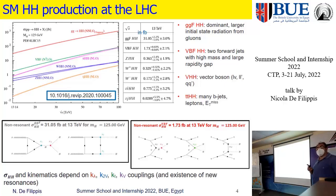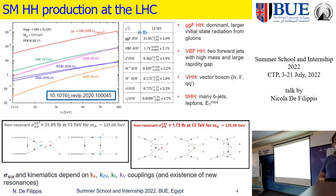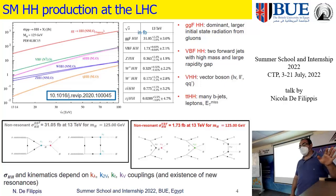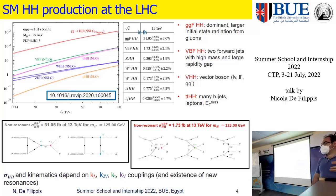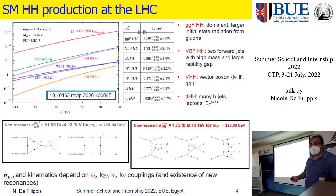We need more statistics and more data. We are almost close to the sensitivity for measuring kappa_lambda, but we are not able yet to have evidence because the cross-section is very small. There is a large number of theorists now studying the cross-section for double Higgs production for all production modes at the highest precision — NLO and NNLO and beyond.